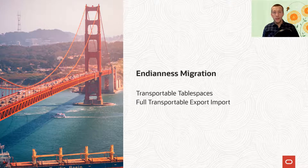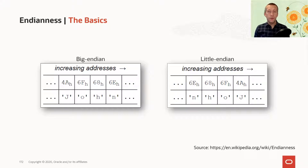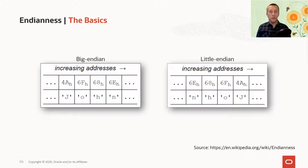Let's talk about transportable tablespaces and cross-endian migration. First, let's talk a little about the basics of the endian format. This comes down to the very architecture of the computer where the database is running. In a big-endian platform, when the computer stores information in memory, it will read from left to right, whereas on a little-endian platform, it will read the other way around. This also applies in certain situations when data is stored to disk, and that's why we need to convert the data when we go across endianness.